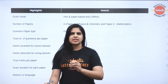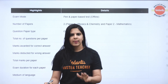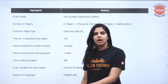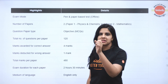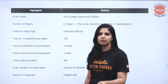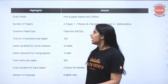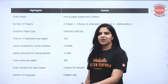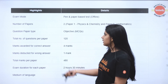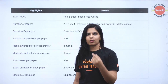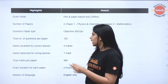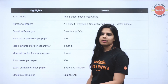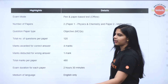If we are going to explain the exam patterns, how many questions are available. First, if we are going to work on our exam offline or online, pen and paper use that exam. Then the number of papers: first paper is physics and chemistry included, and second paper is mathematics. Question paper type is MCQs. Total number of questions per paper is 120, with 4 marks for every correct answer and minus 1 for wrong. Total marks per paper is 480. Exam duration is 2 hours 30 minutes. Medium of language is English only.